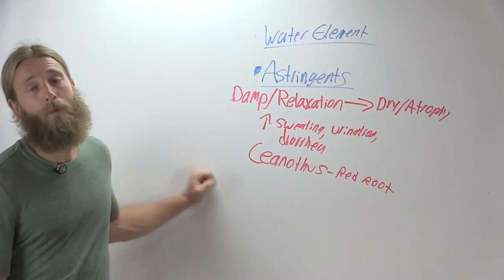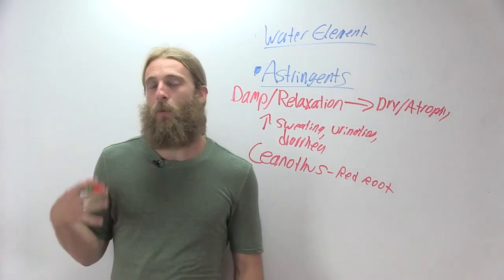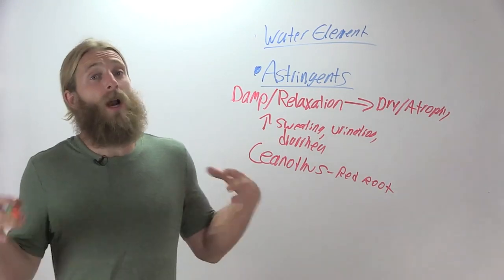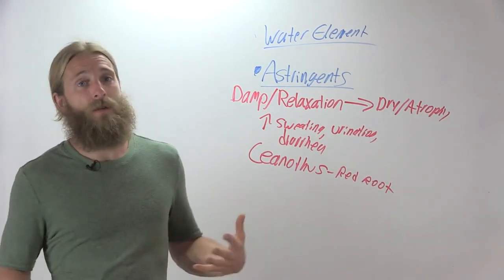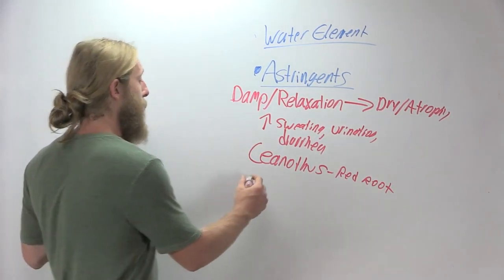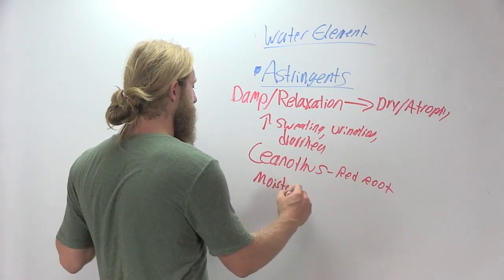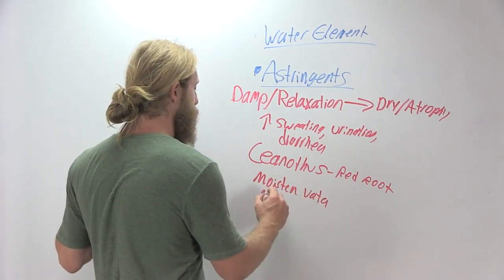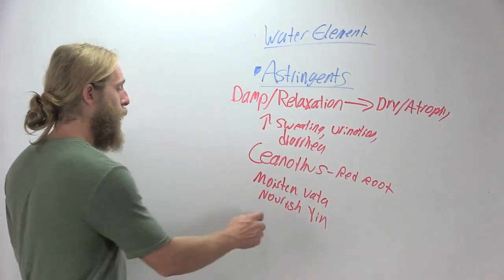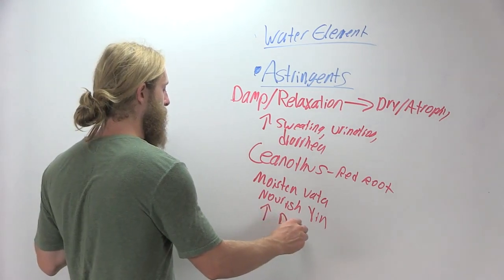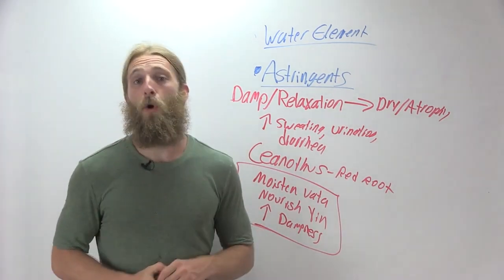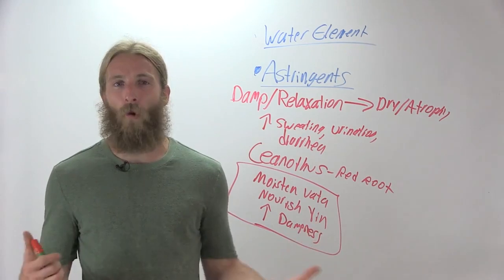But those are kind of some of our main actions that we want to think about, that we want to consider for this dry atrophy tissue state. This is why you got to know your moistening remedies. So I really encourage you to research herbs that will moisten vata or nourish yin if you're studying Chinese systems or just increase dampness in the tissues. These are all critical remedies to know. So I hope that was illuminating and clarifying for you.